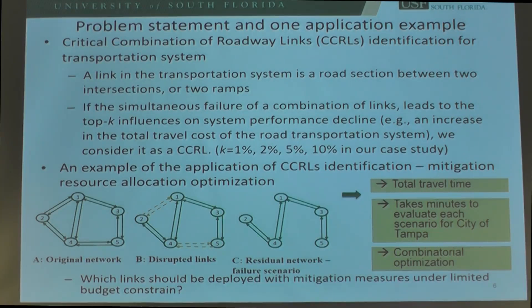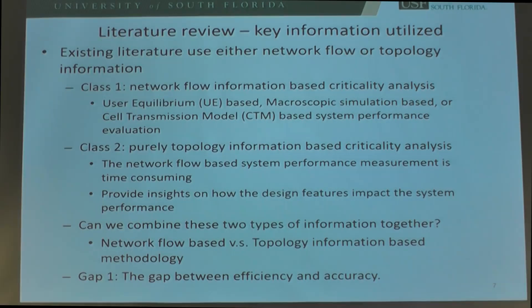However, to identify critical combinations of roadway links, this evaluation must be done extensively. That's why we need to improve time efficiency of system performance evaluations through machine learning. Before diving into the methodology, I'll give context on how this problem is tackled in the literature. There are two perspectives. The first is key information utilized: either traffic assignment results based on user-equilibrium or macroscopic simulation, or topology information alone for criticality analysis.